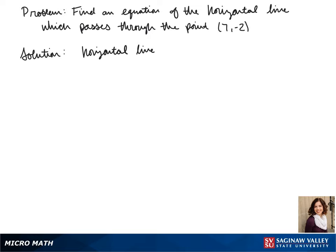Because it's a horizontal line, the form of our line is y equals a. In a horizontal line, our y value never changes. So for 7, negative 2 to be part of our line, our equation must be y equals negative 2.